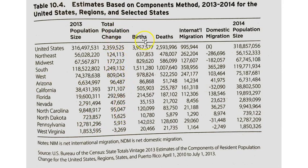We have total population change, births, deaths, and both international and domestic migration, which is important for looking at changes between regions. As you can see here, the Northeast has lost the most while the South has gained the most for this time period. From that we are able to estimate the 2014 population size for each of these spatial units — the United States as a whole, the different regions, and the different states.